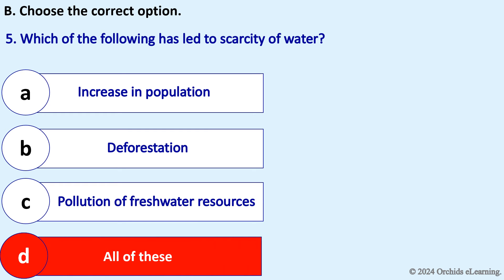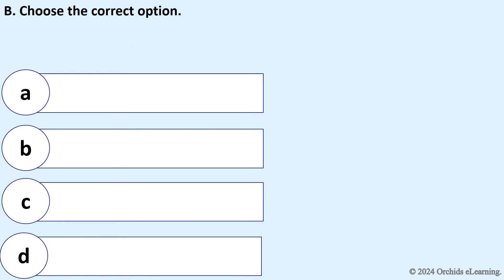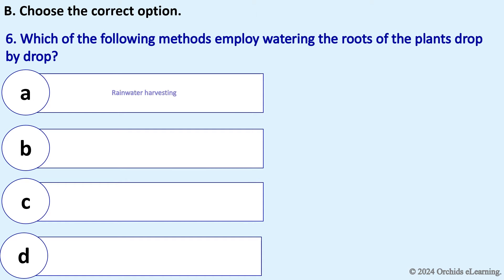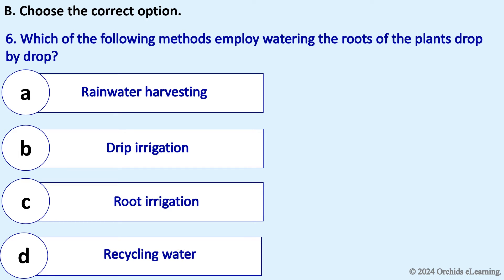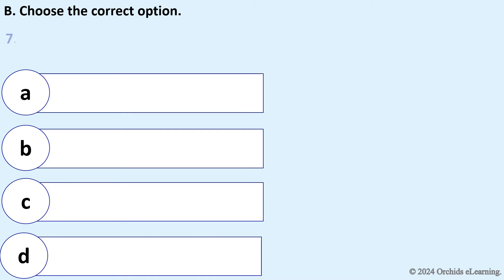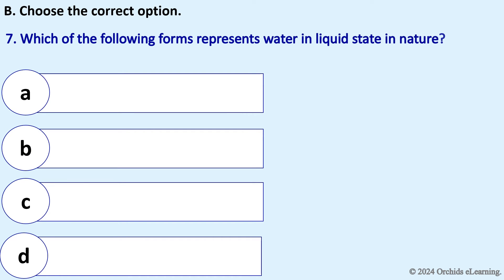Which of the following has led to scarcity of water? Answer: All of these. Which of the following methods employs watering the roots of the plants drop by drop? Answer: Drip irrigation.